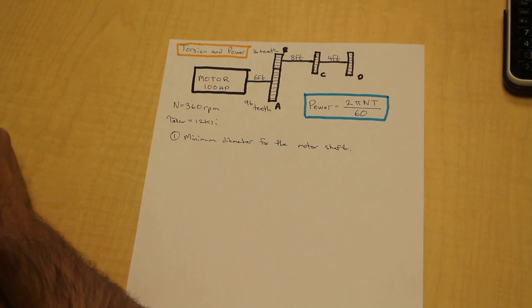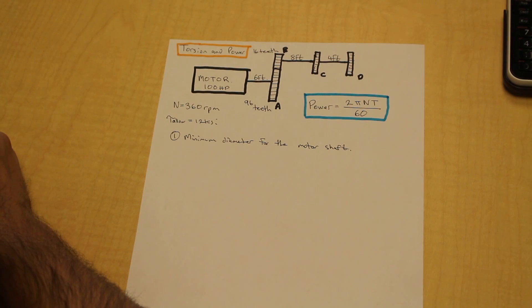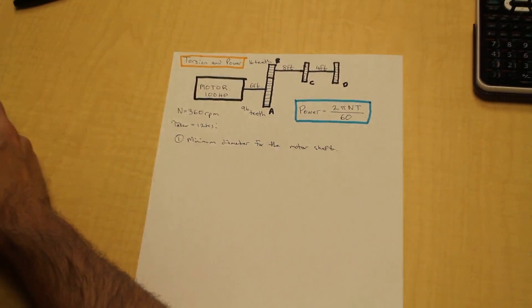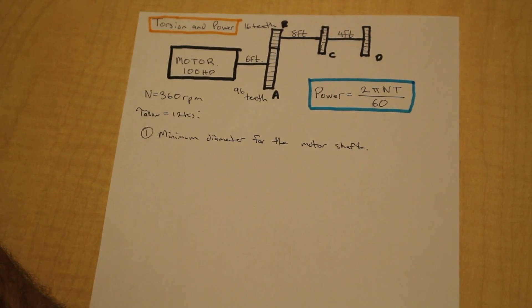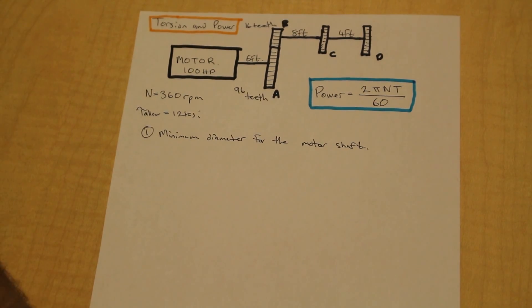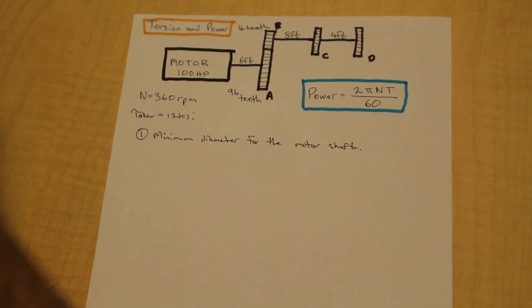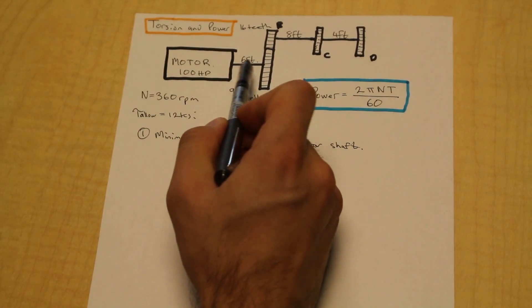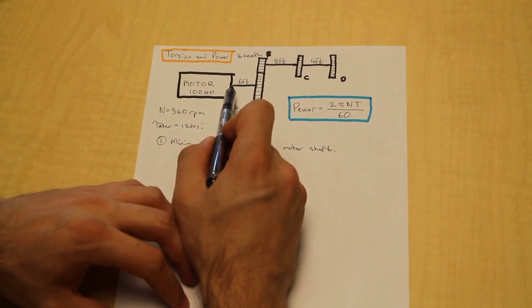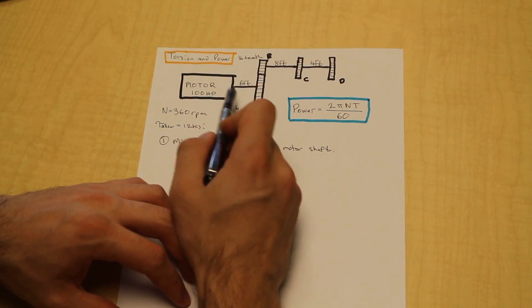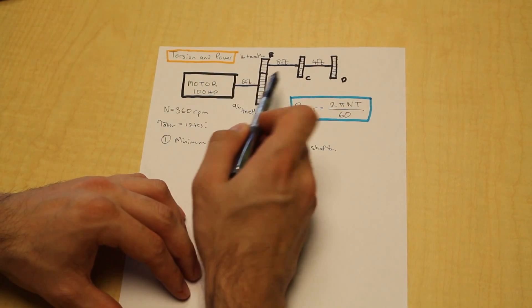For everyone else, let's begin. So this question asks us to find the minimum permissible diameter for the motor shaft. The motor shaft is essentially the shaft that's connected to the motor — it's this shaft here.